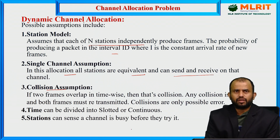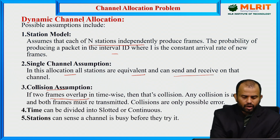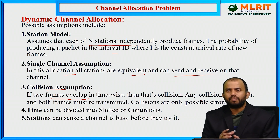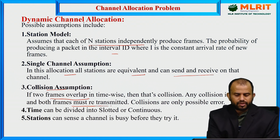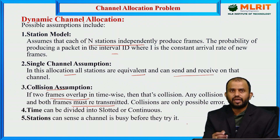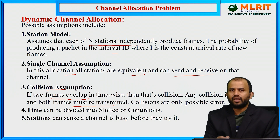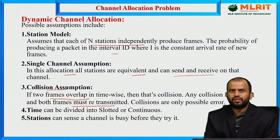The next assumption is the collision assumption. If multiple customers have multiple frames assigned at the same instant, these two frames overlap and a collision may occur. If any collision occurs, an error occurs and both frames must be retransmitted. While allocating channels to N customers, frames must not overlap. If any frame overlaps based on timing, an error occurs and we must perform retransmission of the entire frame.